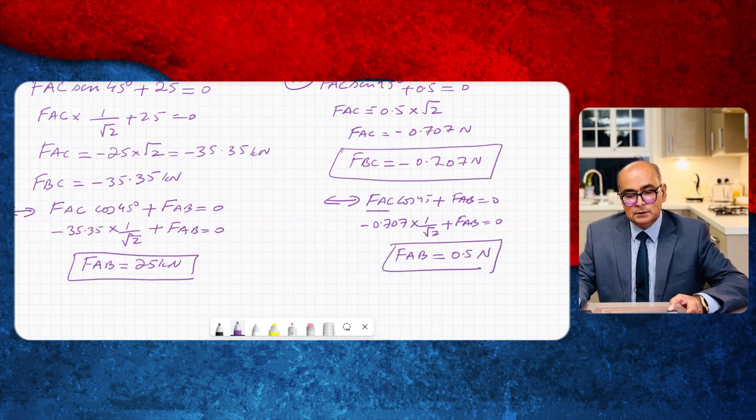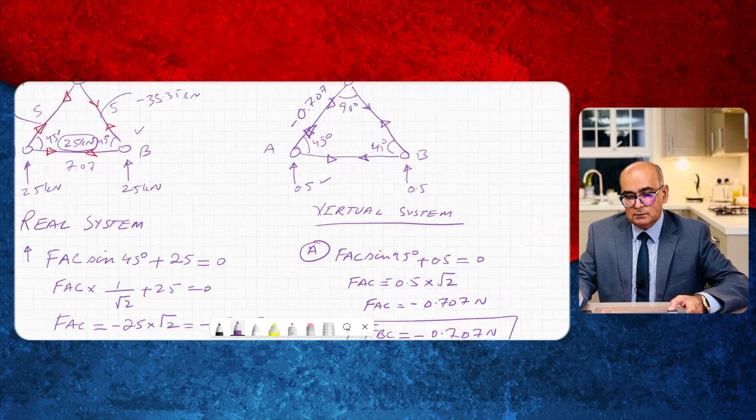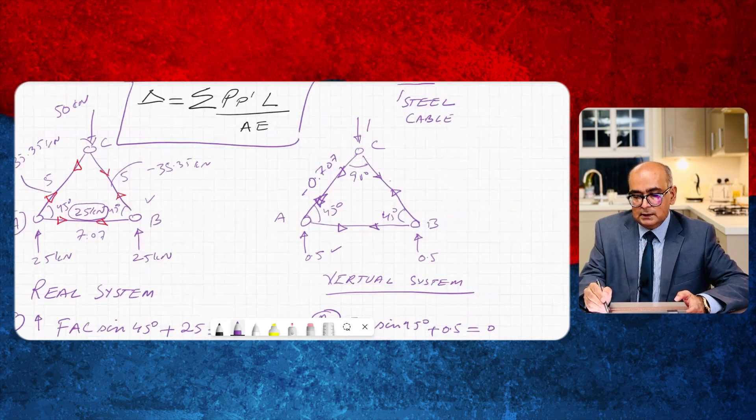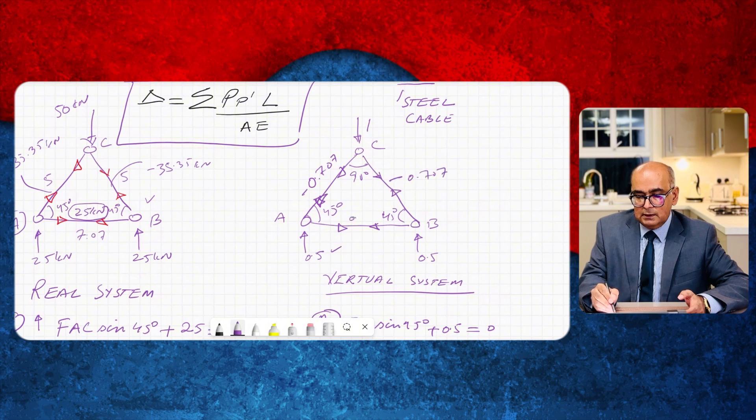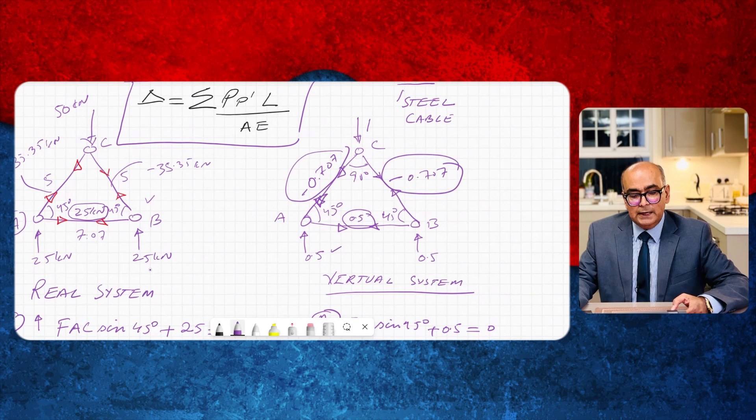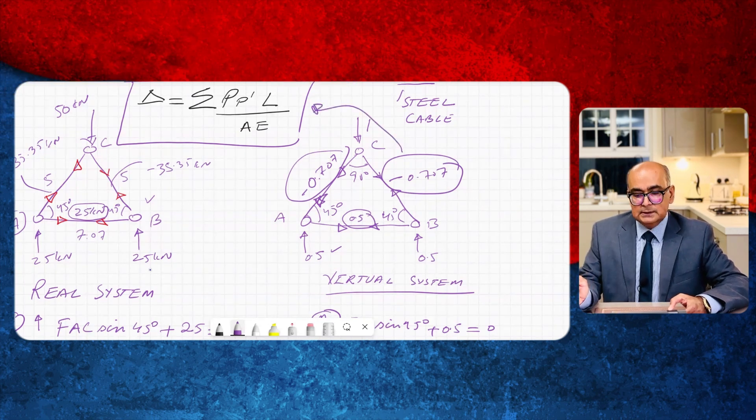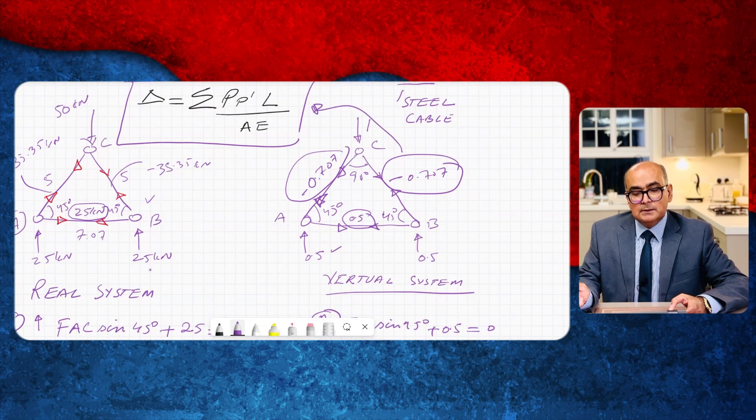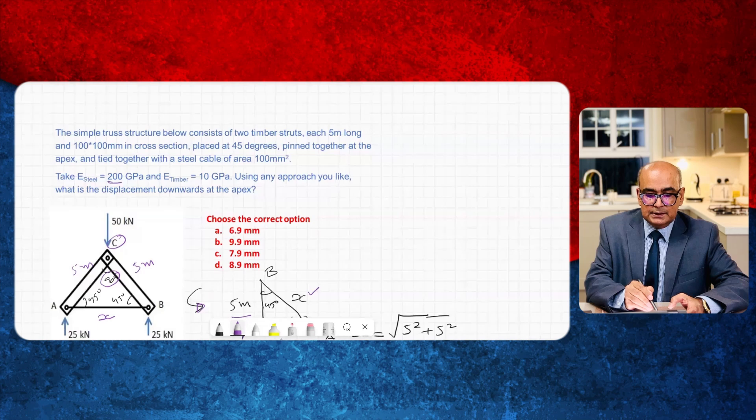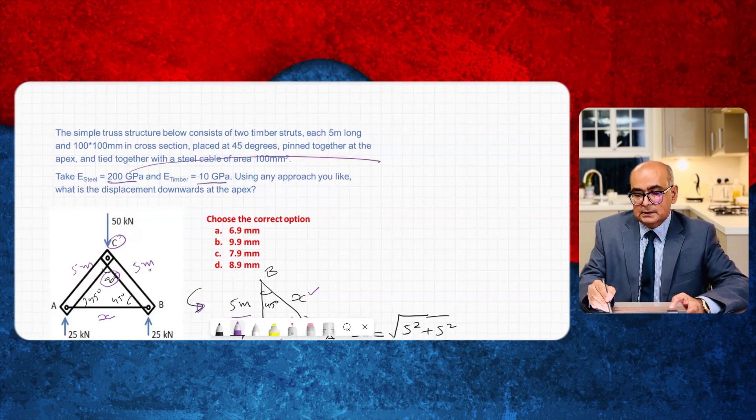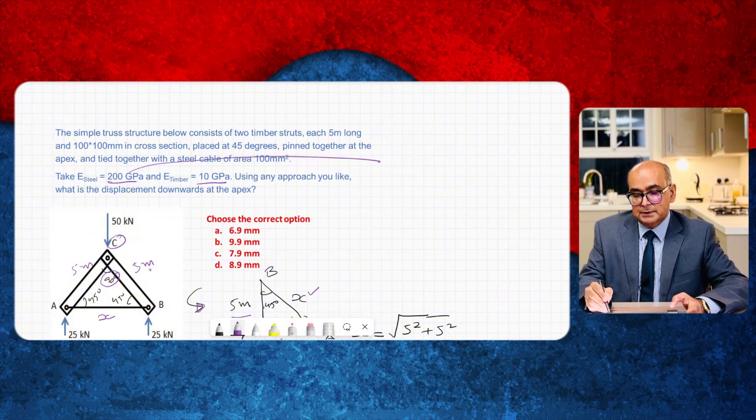So once you have got these values then you can write these values over here. Here I have minus 0.707 and here I have 0.5. So these are the force values. Once I've got these values I will put them back in this equation summation of P P dash L over AE. Now here E is given in gigapascal. So I will convert this E into newton per millimeter square.